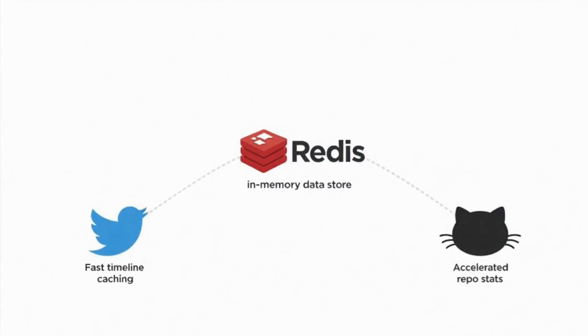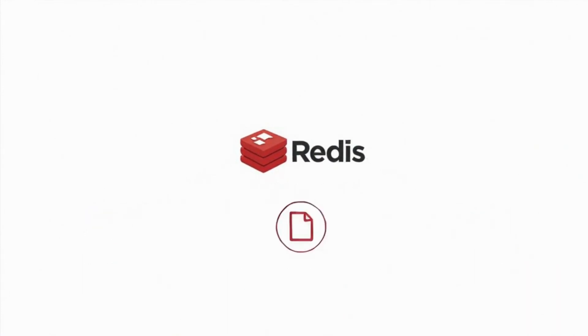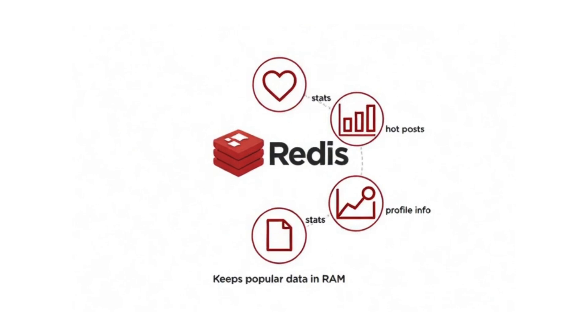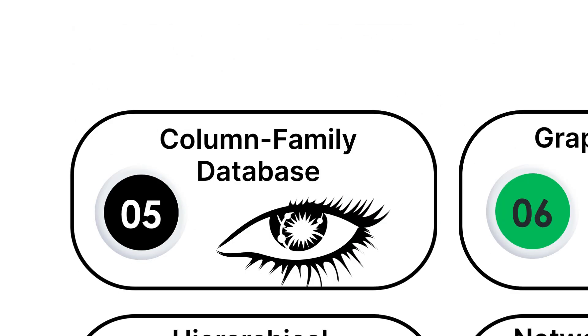Redis is a popular example that's used by companies like Twitter and GitHub to make their websites load faster by storing frequently accessed information in memory.